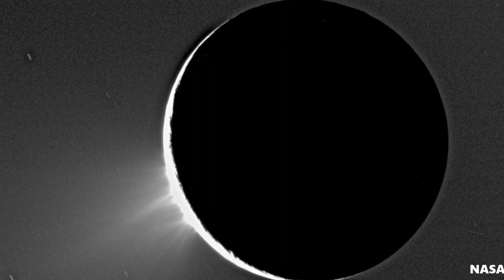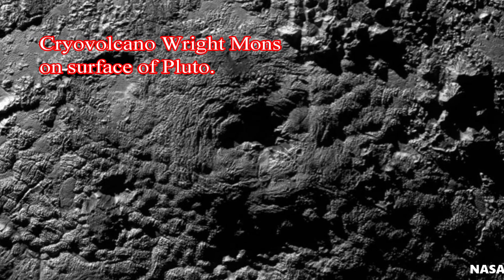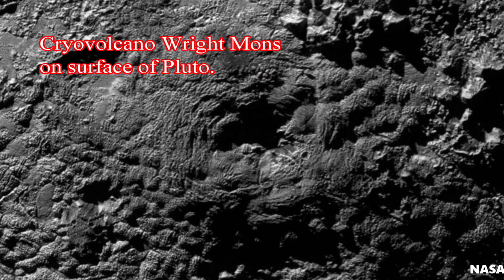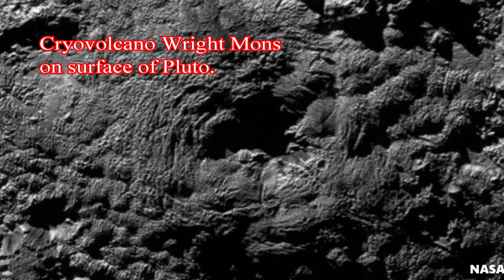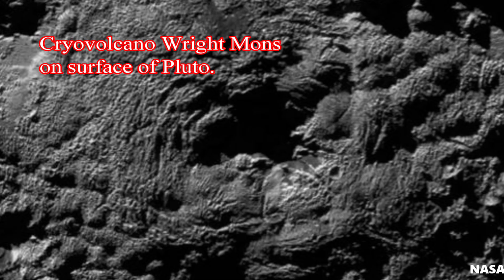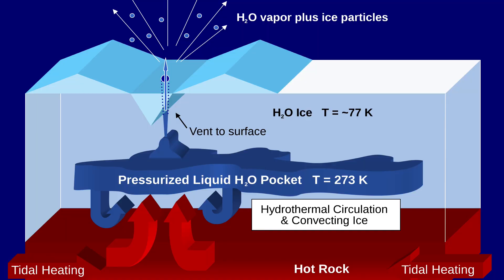Here's Enceladus from a little farther away. On the bottom left you can see the plumes from the cryovolcanoes as well as the material being injected into space. Here's a cryovolcano on the surface of Pluto — it is about 150 kilometers wide and about 5 kilometers tall.